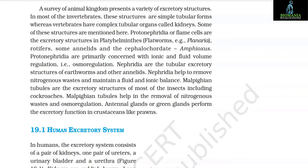A survey of the animal kingdom presents a variety of excretory structures. In most invertebrates these are simple tubular forms, whereas vertebrates have complex tubular organs called kidneys. Protonephridia or flame cells are excretory structures in platyhelminthes (e.g., planaria), rotifers, and amphioxus, primarily concerned with osmoregulation. Nephridia are tubular excretory structures of earthworms. Malpighian tubules are excretory structures of most insects including cockroaches. Antennal glands or green glands perform excretory functions in crustaceans like prawns.